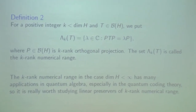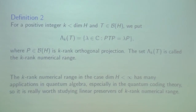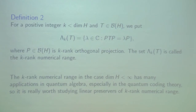For a positive integer K less than the dimension of H, we put the following set, where V is an orthogonal projection, and this set is called the character numerical range. The character numerical range has many applications, in particular in quantum algebra, especially in quantum coding theory or quantum error correction theory. Some authors have noted that it is really important to study the character numerical range.